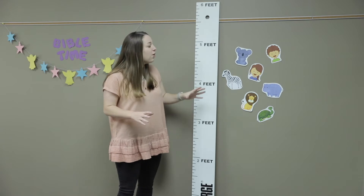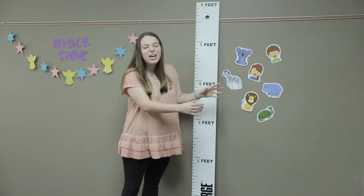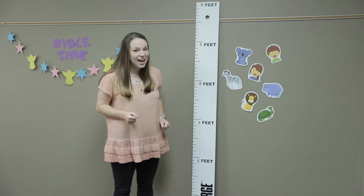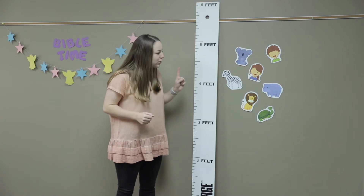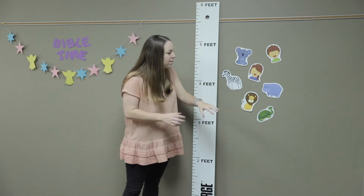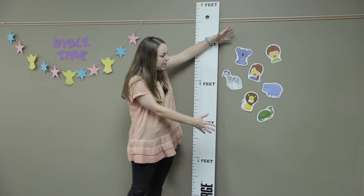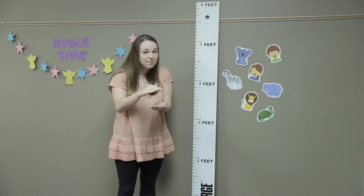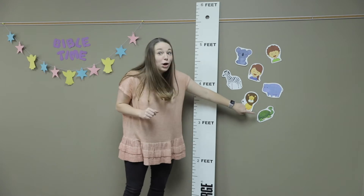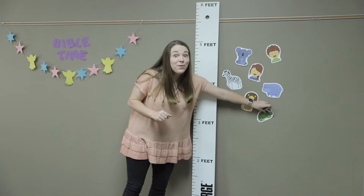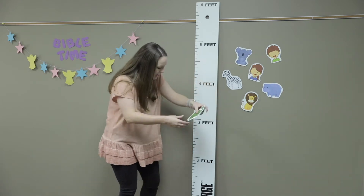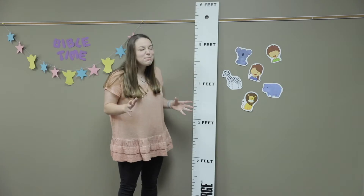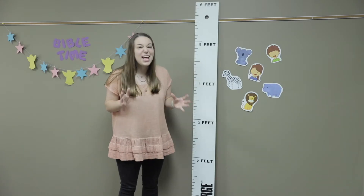We're going to see how tall these animals and people are in comparison to one of our Bible characters today. Which animal out of all of these do you think is the smallest animal in height? If you guessed the turtle, you're right. The turtle is only about four inches tall.